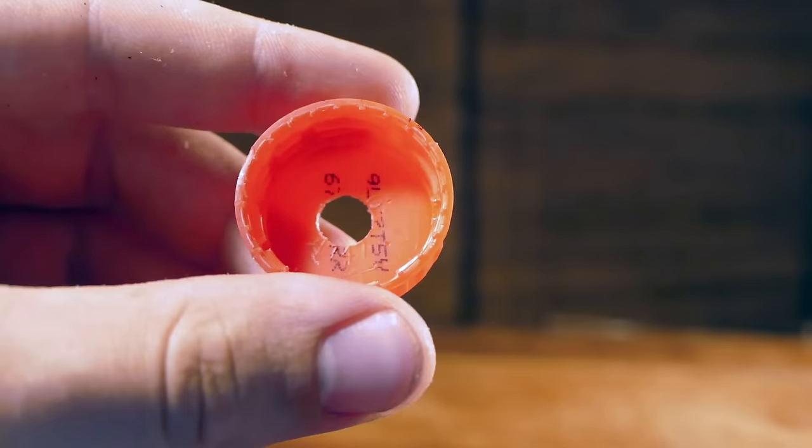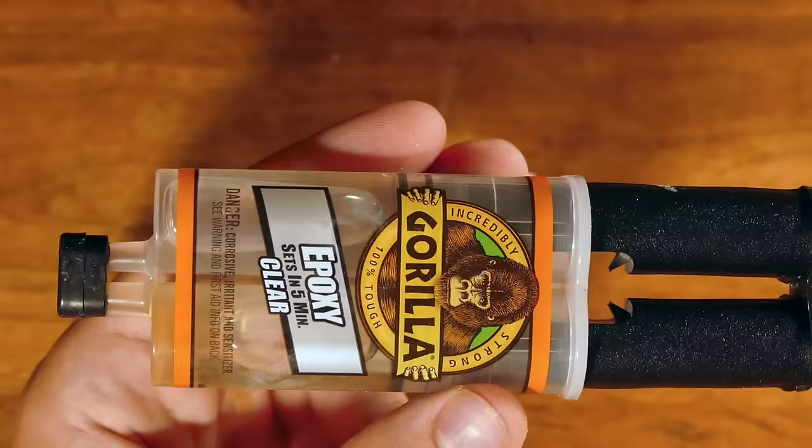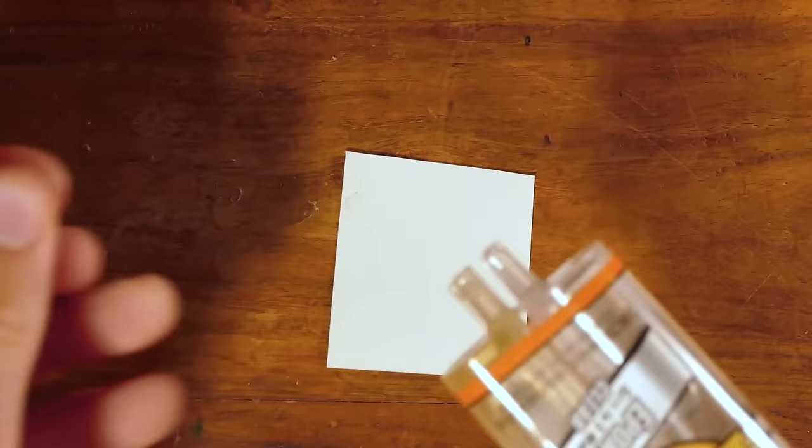Now, you want to go ahead and scuff up the inside of the cap. This is going to make for a better glue bond. Now, let's go ahead and mix a little bit of epoxy.